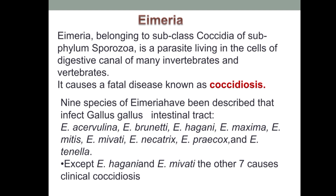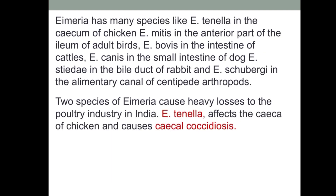There are mainly nine species of Eimeria that have been described which infect the intestinal tract of Gallus gallus. Eimeria has many species: Eimeria tenella, which infects the caecum of chicken; Eimeria bovis in the intestine of cattle; Eimeria canis in the small intestine of dogs. Two species of Eimeria cause heavy losses to the poultry industry in India.